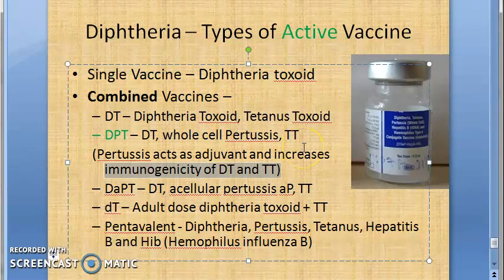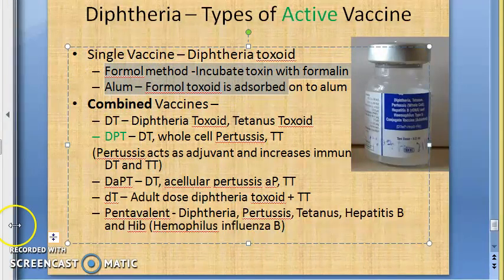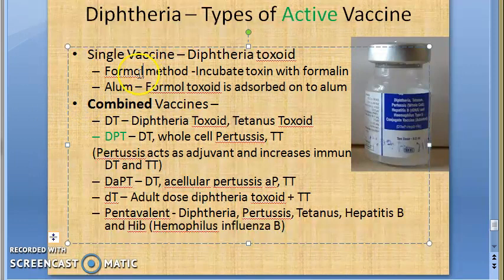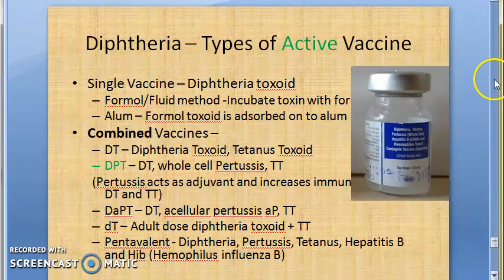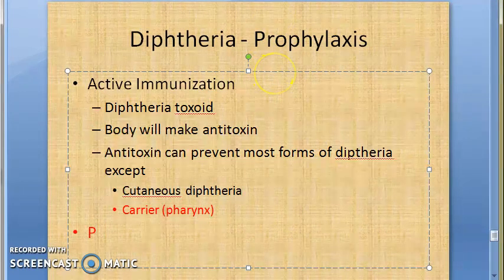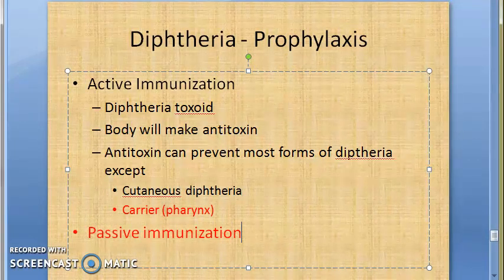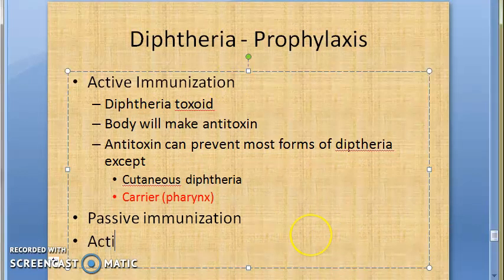How to prepare diphtheria toxoid has also been described - the formalin method, alum method, and others - but we are not going into those details. Formalin is also called fluid toxoid; alum is used too. Also importantly, just like active immunization is available, passive immunization is also available, which contains antitoxins. You can also give a combination of active and passive immunization.